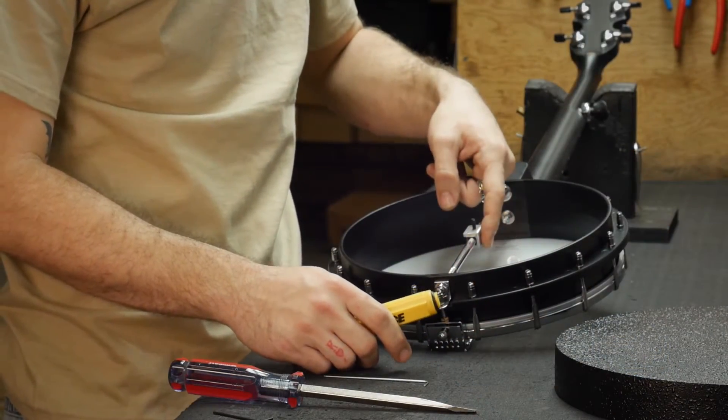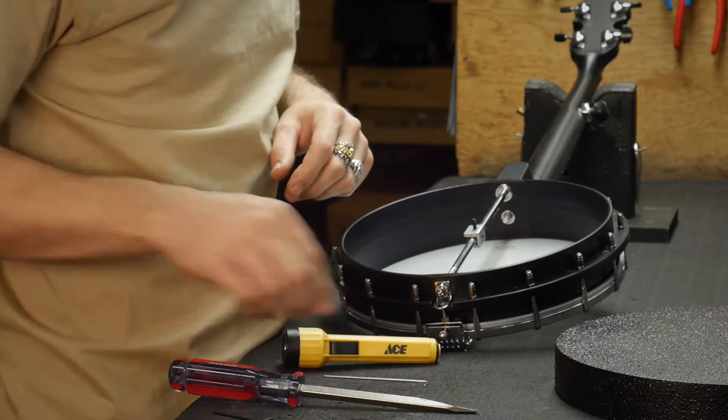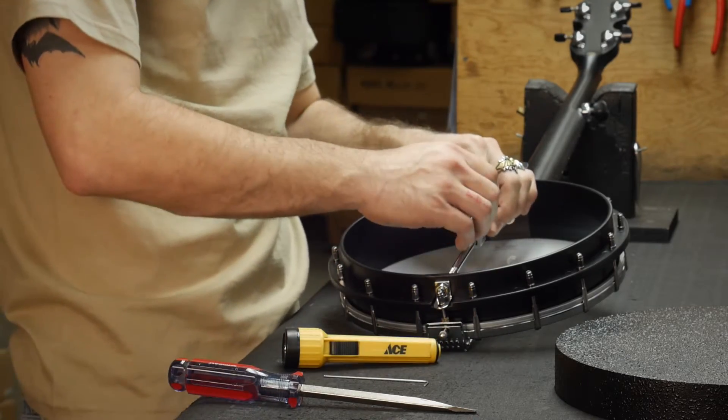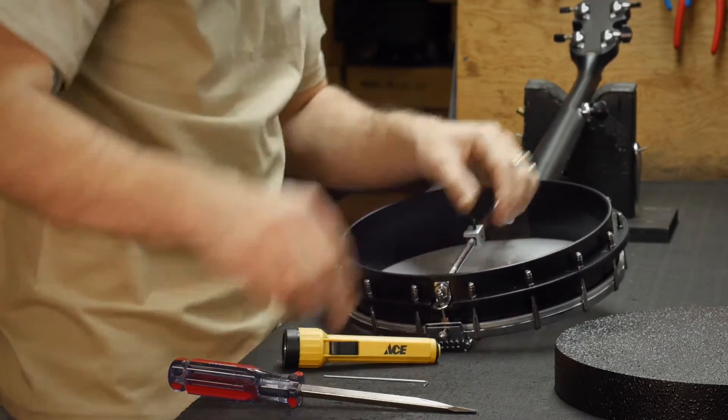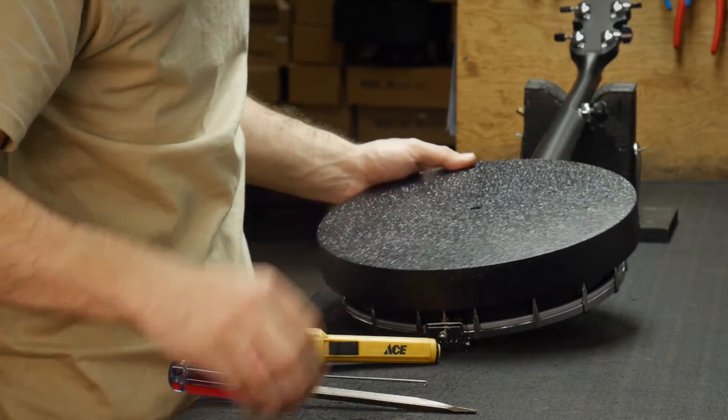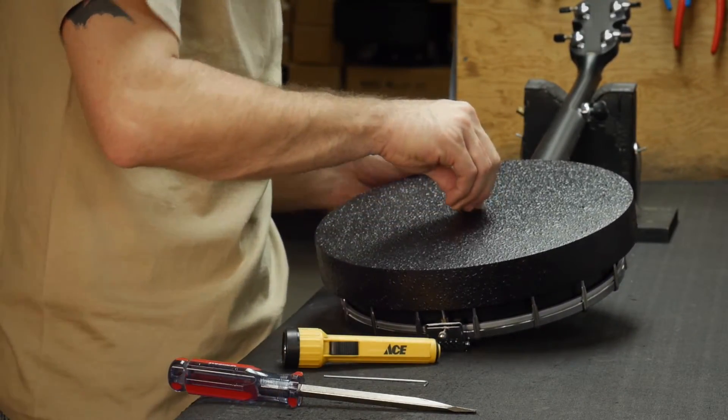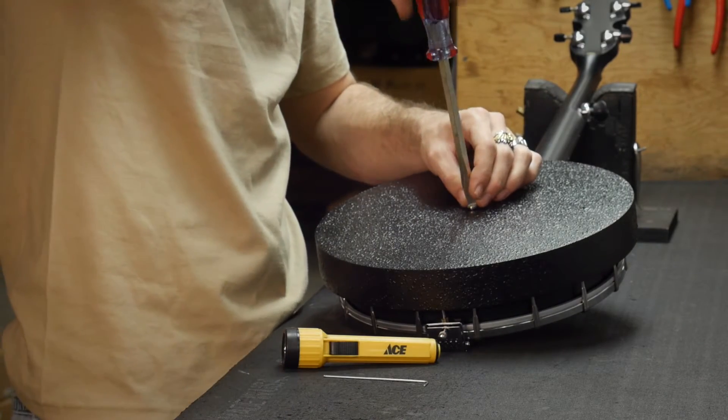Now if yours doesn't line up, all you have to do is loosen up the set screw in the back and adjust it accordingly, which ours is lined up like I said, so we're going to tighten the set screw down, place the resonator back on top, and take the set screw included in the kit and a flat blade and just tighten it down.